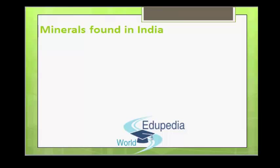Tamil Nadu has sizable reserves of bauxite, gypsum, mica, limestone, lignite and ores of iron and manganese. West Bengal is rich in coal, dolomite and tungsten ores. Kerala has large deposits of limonite, monazite, rutile and garnet. Uttar Pradesh is rich in rock phosphates, dolomite and magnesite.